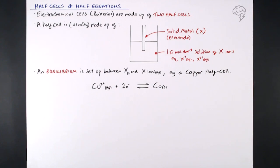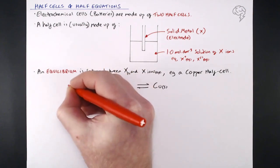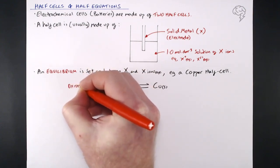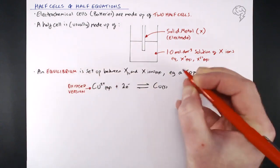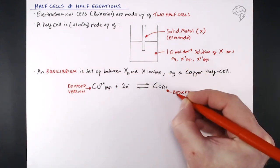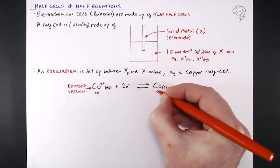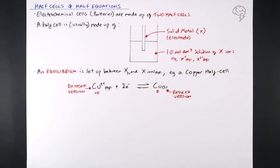So it's the number of electrons you need to transfer between Cu²⁺ and Cu — the aqueous ions and the metal. Really importantly, we have to write them this way around to get through these questions in the exam paper. Oxidized version on the left, reduced version on the right. If you're ever confused about which that is, just look at the oxidation numbers: we've got plus two for Cu²⁺ and zero for Cu, the solid copper version.